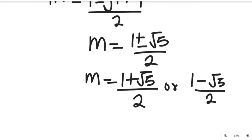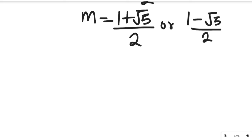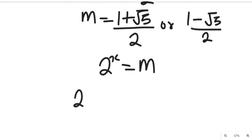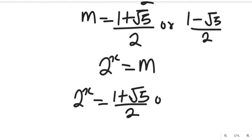Recall from our substitution that 2 to the power of x is equal to m. Substituting back, we have either 2 to the power of x equals 1 plus root 5, divided by 2, or 2 to the power of x equals 1 minus root 5, divided by 2.